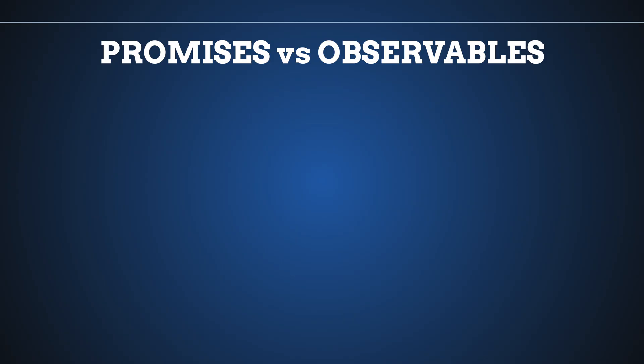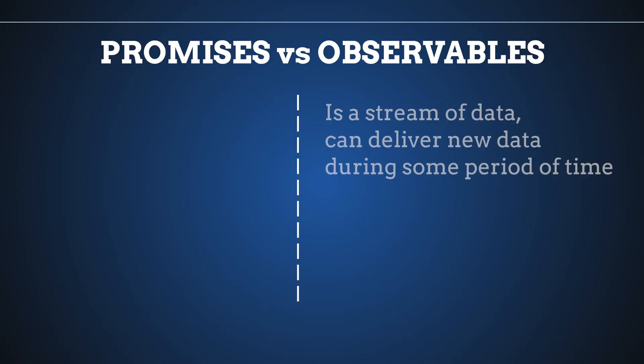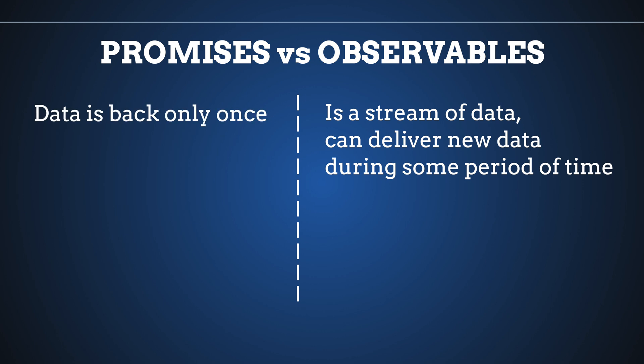The biggest difference between observable and promise is that an observable is a stream of data, which means it can deliver new data over a period of time. Inside a promise we are getting our data back only once.